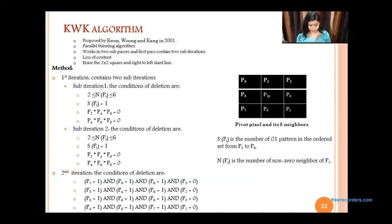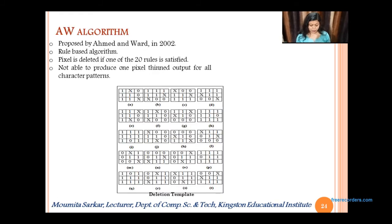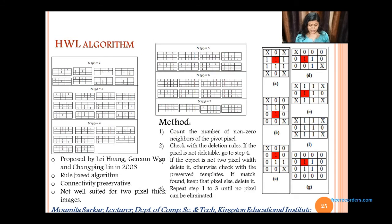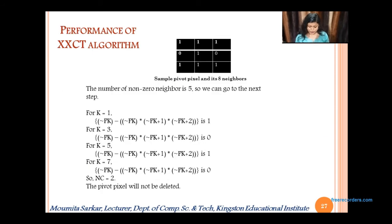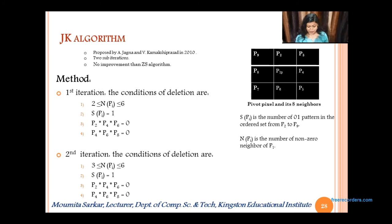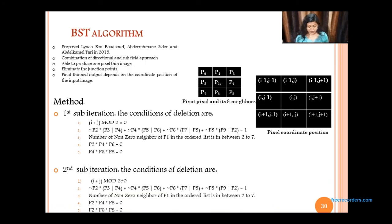We have the KWK algorithm — you can see its performance. We have the AW algorithm, the HWL algorithm, and the BG algorithm — you can see its performance. We also have the JK algorithm, the JAK algorithm, the JAKNAS algorithm, and the BST algorithm.